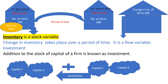Before we take up the main concept, first let us understand what is inventory. Inventory is nothing but a physical stock of raw material, semi-finished goods, or finished goods maintained by firms for smooth functioning of their economic activities. Inventory is called a stock variable as it is measured at a point of time.